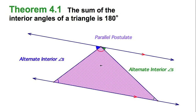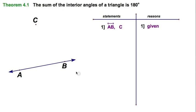It's that easy. Let's write it in two column form now. Now let's write that proof in two column form, starting with a given line AB and a point C not on AB.